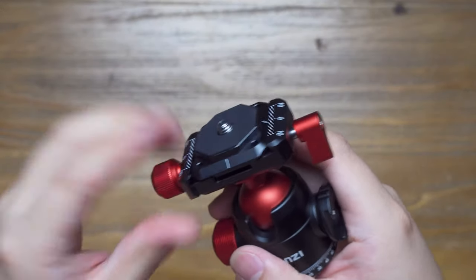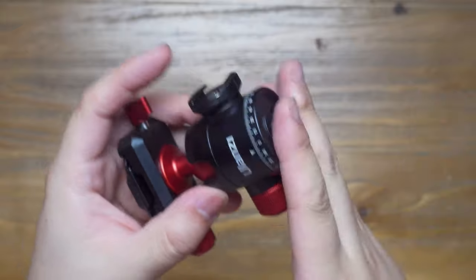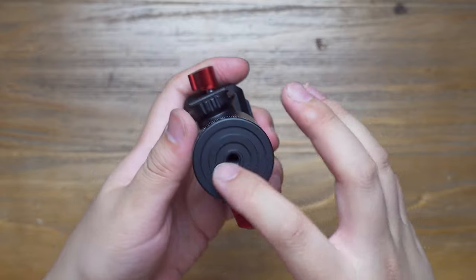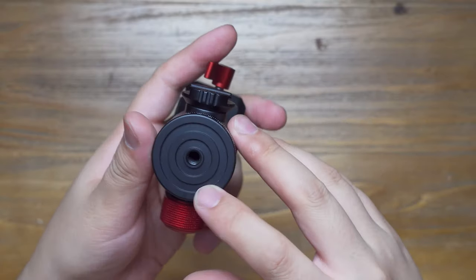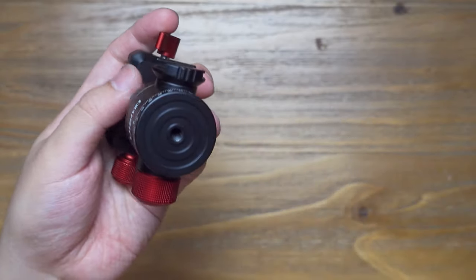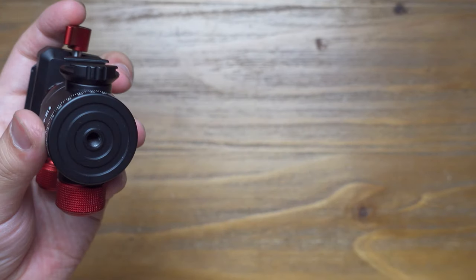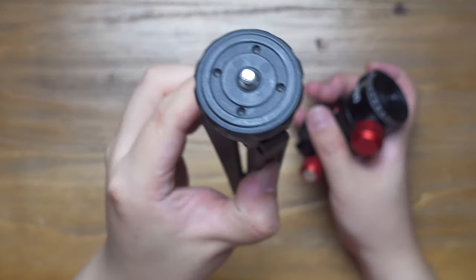It has two panorama rotators, one on the bottom and one on the quick clamp. Let's take a look from the bottom to the top. It has a standard mount on the bottom and is compatible with most mini tripods like this one, as well as this one.